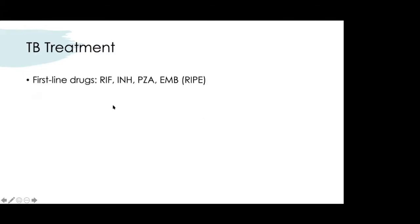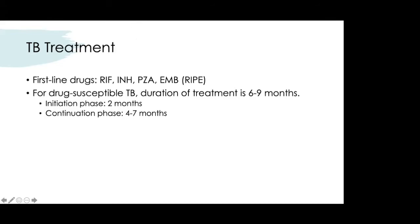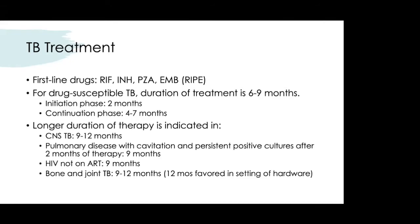Treatment for drug-susceptible TB is RIPE therapy: rifampin, isoniazid, pyrazinamide, and ethambutol. For drug-susceptible TB, duration is 6–9 months — an initial 2-month intensive phase followed by a 4-month maintenance phase for a total of 6 months. Extend to 9–12 months for CNS disease, severe pulmonary disease with cavitation, persistent positive cultures after 2 months, HIV not on ART, or bone and joint disease especially with hardware.